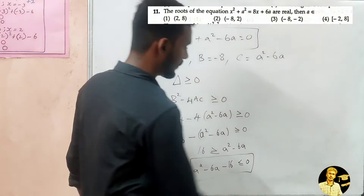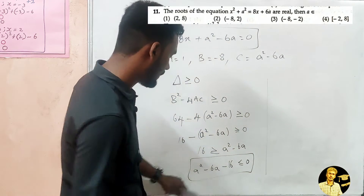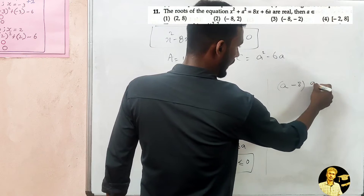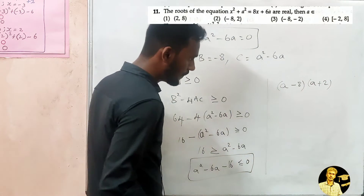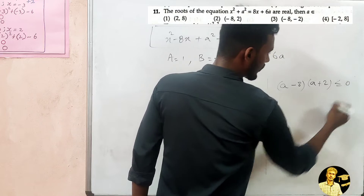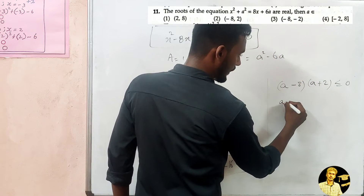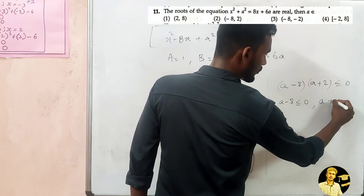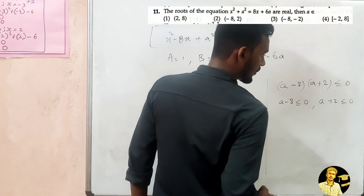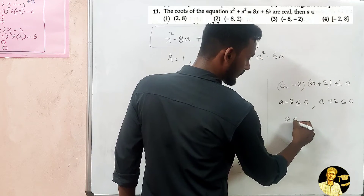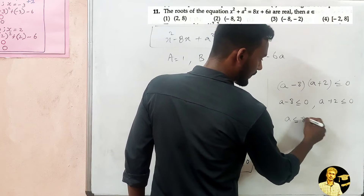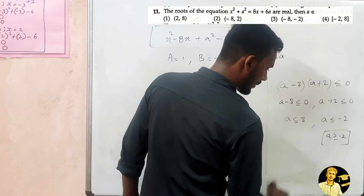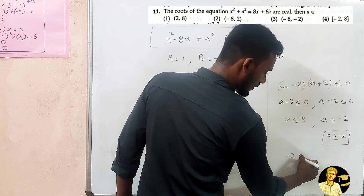Factoring the expression, we get (a - 8)(a + 2) ≥ 0. This gives us the conditions a - 8 ≥ 0 and a + 2 ≥ 0, so a ≥ 8 or a ≥ -2.